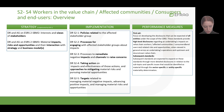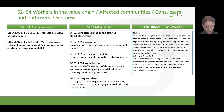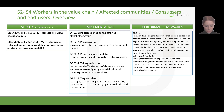Disclosure requirement one requires information on the policies adopted in relation to the relevant affected stakeholder group. Disclosure requirement two is on the processes in place to engage affected stakeholders about impacts on them as part of the company's ongoing due diligence process. Disclosure requirement three is on processes to remediate negative impacts on value chain workers, affected communities, and consumers and end users, as well as channels to raise concerns. Disclosure requirement four is on taking action on impacts and effectiveness of those actions, as well as approaches to mitigating material risks and pursuing material opportunities. And lastly, disclosure requirement five is on targets in relation to negative and positive impacts, as well as risks and opportunities.